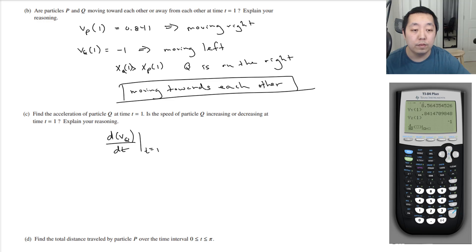Here I'm going to do the nth derivative. And here I'm going to do y2, which is vQ. And then I'm going to evaluate this at t equals 1. So this is equal to 1.027.